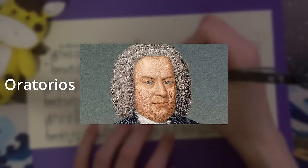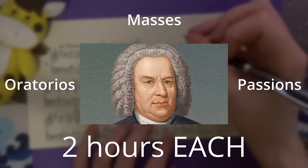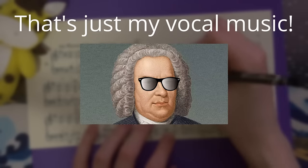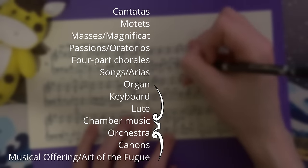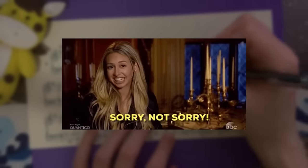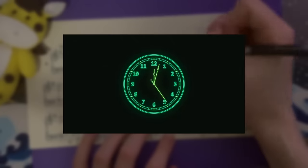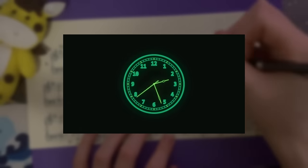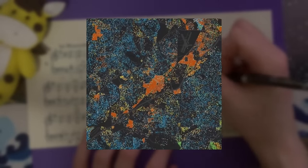Bach also wrote oratorios, masses, and passions that easily take at least two hours each to perform — and that's just his vocal music. He has an extensive catalog of purely instrumental music as well. The point is, Bach wrote loads of music, and even though it took me the better part of 18 months to analyze Bach's chorale harmonizations, they only make up a fraction of a fraction of a fraction of his total output as a composer.